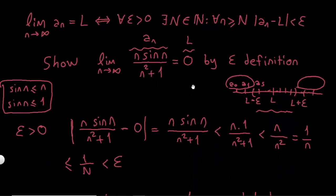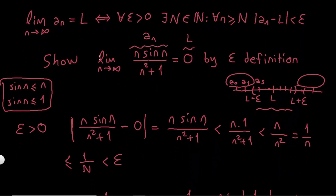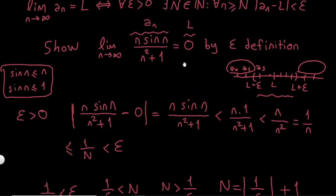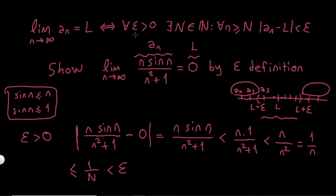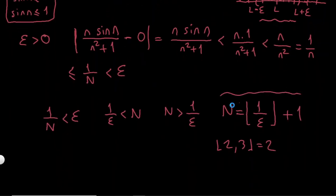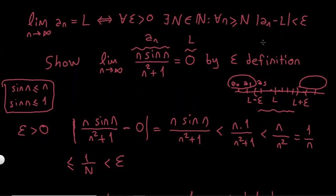Let's review what we have done. I picked an arbitrary epsilon and found a function of epsilon that gives me N. The definition requires that for each epsilon there exists at least one such N, and I showed that N exists and gave a formula to find it for every epsilon. This condition is satisfied, and therefore I have shown that this limit equals L, which is 0.